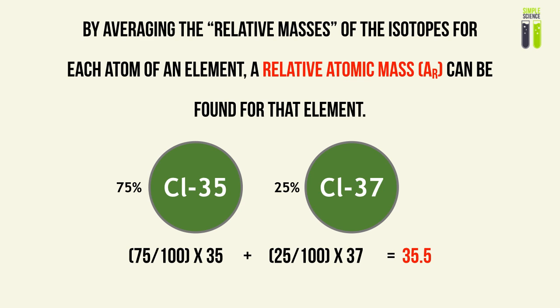For elements that exist as a single isotope, their relative atomic mass is simply the relative mass of that particular isotope. However, for elements such as chlorine, which exist as more than one isotope — in this case two isotopes — we must average the relative masses based on the percentage abundance in the universe to find the average relative atomic mass, the Ar, for chlorine.